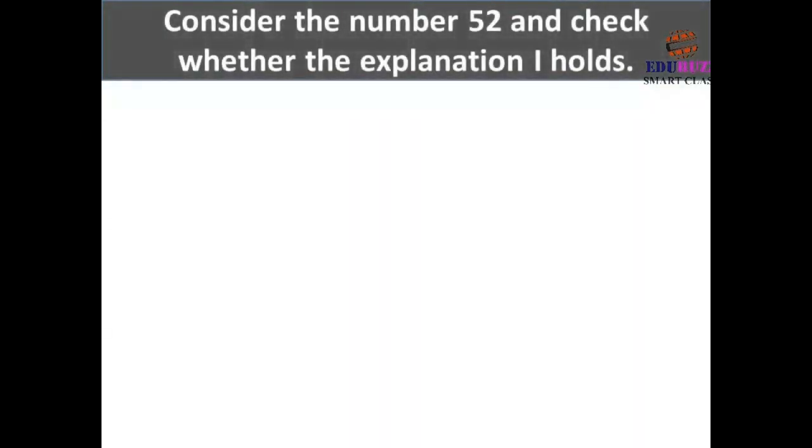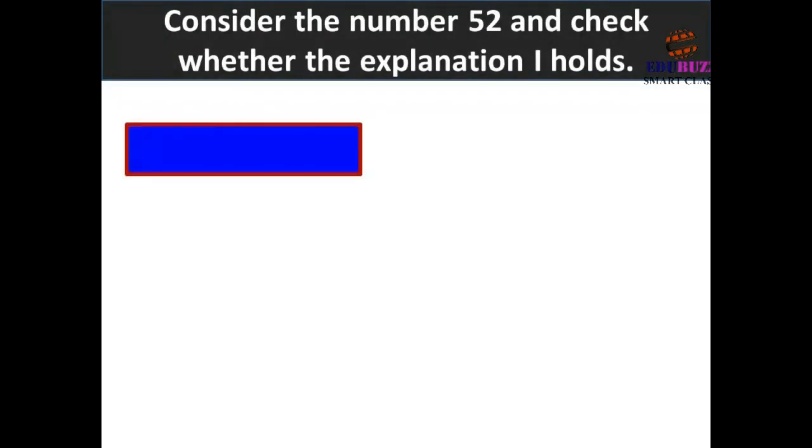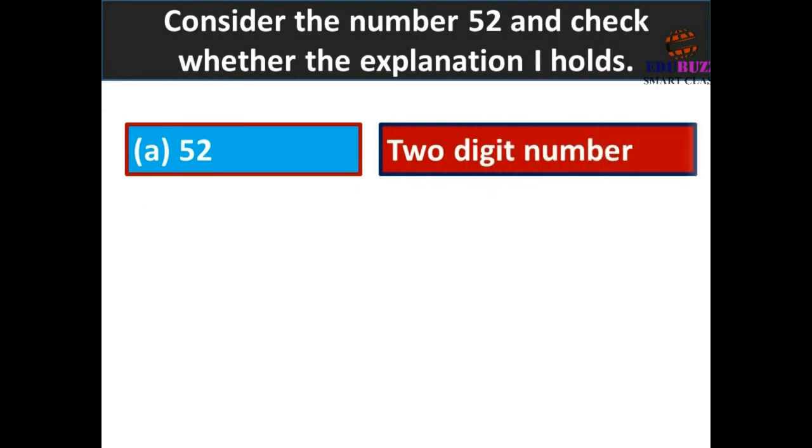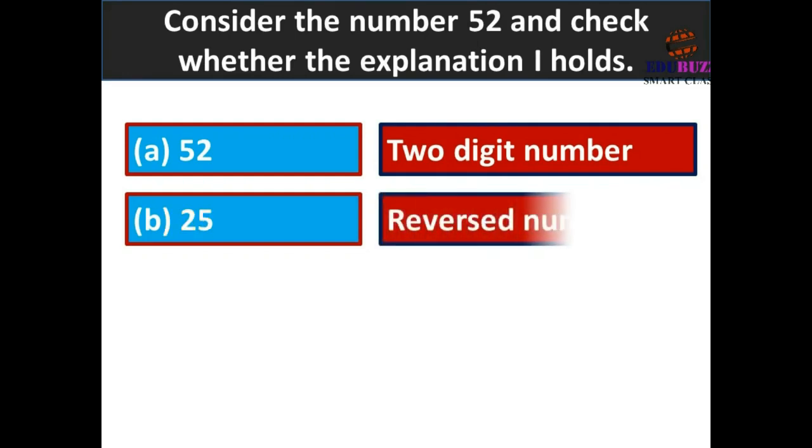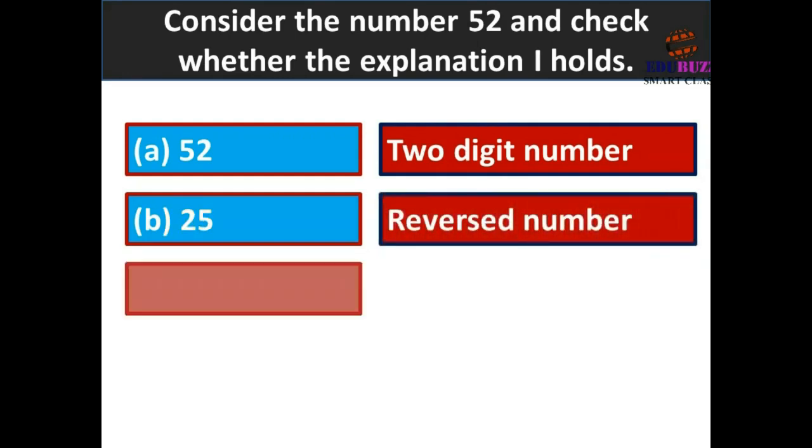Consider the number 52 and check whether the explanation holds. 52 is a two-digit number. 25 is the reversed number. 52 plus 25 equals 77. Add the numbers.